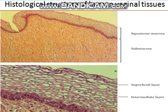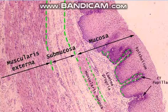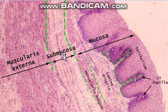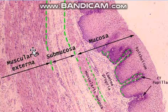Below the submucosa is the muscularis, which is made up of smooth muscles. So to summarize: the uppermost part is the mucosa, beneath that is the submucosa layer, and below that is the muscularis, which is made up of muscles.